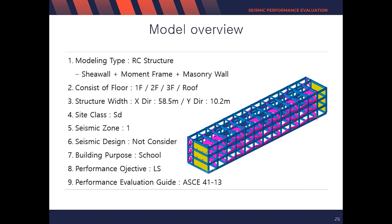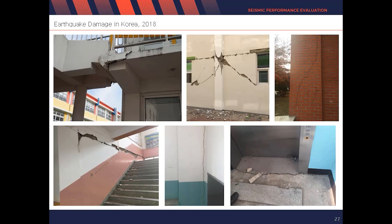In Korea, we have started to analyze seismic performance assessment because of the disastrous earthquake that happened in 2018. At that time, the Richter scale was only 5.0, but it had a huge effect on buildings — mostly because the school was built with masonry walls at least 40 years ago. Because of this reason, the earthquake had an immense effect on these types of buildings. Since this accident, engineers have analyzed the seismic performance assessment of all school buildings.